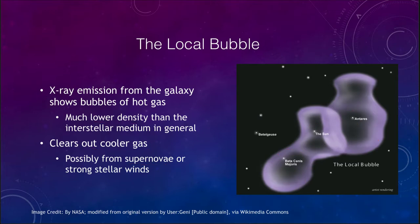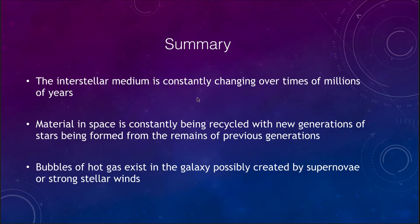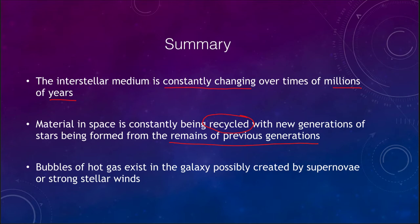To summarize: the interstellar medium is constantly changing over timescales of millions and billions of years. The material in space is being recycled, with new generations of stars forming from the remains of previous generations. Each generation enriches the material a little bit more, adding more heavy element — or metal — content to what forms the next generation. We also note that there are bubbles of hot gas in our galaxy, possibly created by supernovae or strong stellar winds, which clear out regions of the interstellar medium making them much less dense than the surrounding medium.